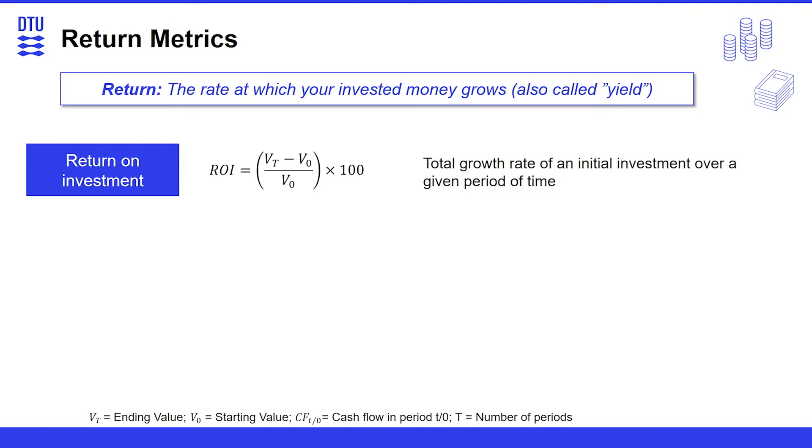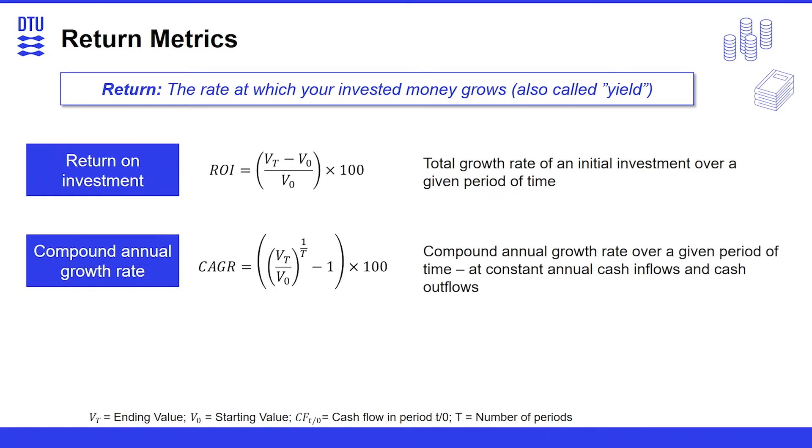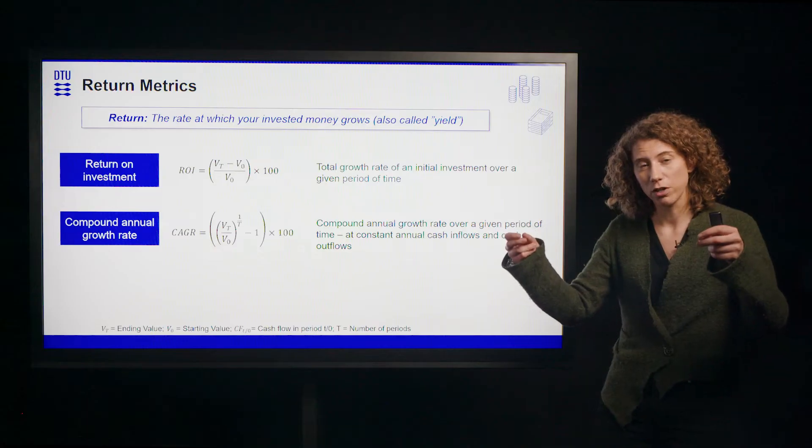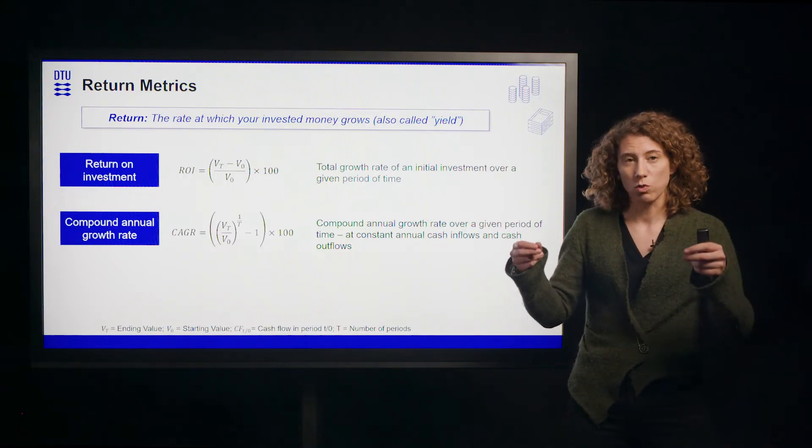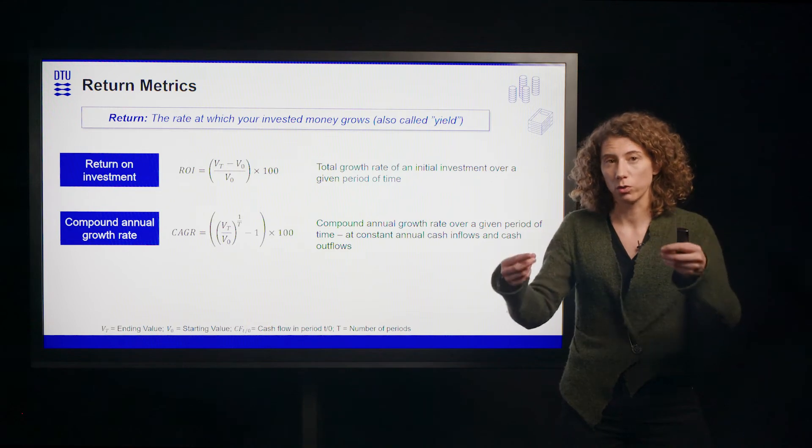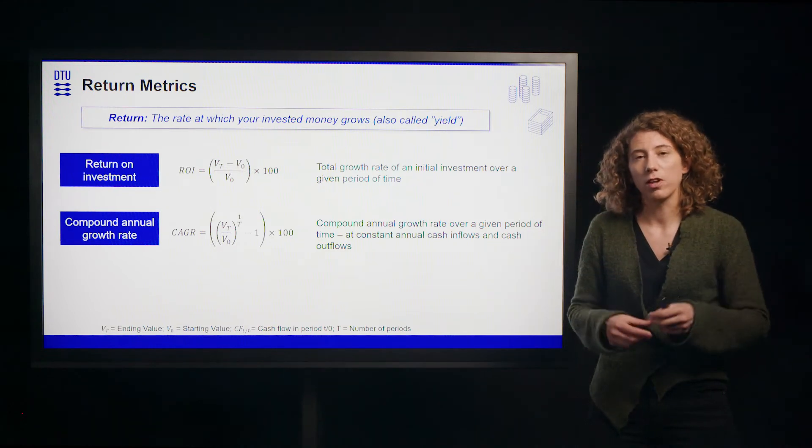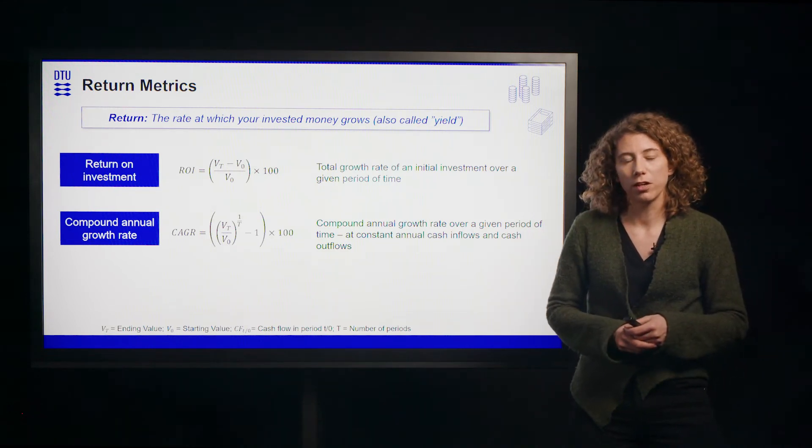It does not take into account the period in between. The compound annual growth rate, CAGR, does exactly that. It looks at the value in the beginning of a project and in the end of a project and also takes into account that in between your money grows. So it's the compound annual growth rate over a given period of time.